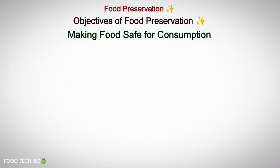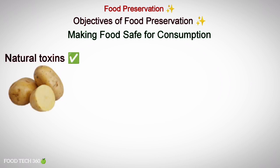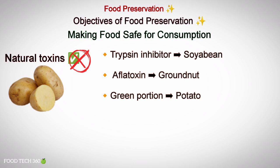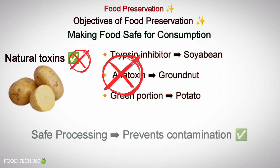Another objective is making food safe for consumption. Some foods contain natural toxins which need to be inactivated — such as trypsin inhibitor in soybean, fungal toxins such as aflatoxin in groundnut and grains, infected portions of food materials, and green portions of potato. Ensure the safety of food by a process to remove these toxins. Safe processing prevents contamination.